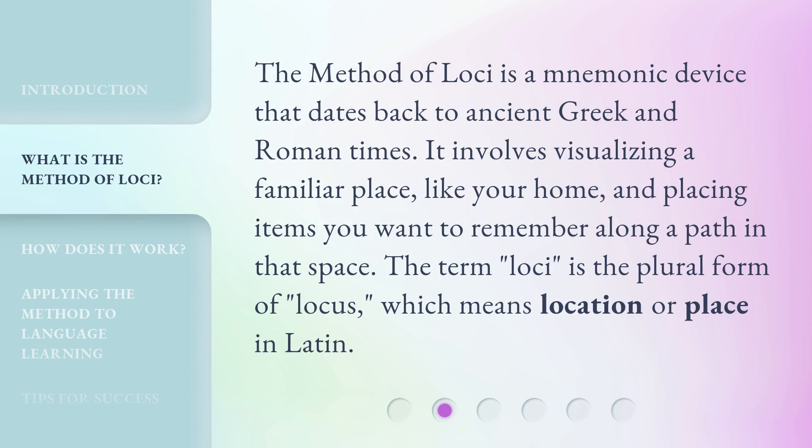The method of loci is a mnemonic device that dates back to ancient Greek and Roman times. It involves visualizing a familiar place, like your home, and placing items you want to remember along a path in that space. The term 'loci' is the plural form of 'locus,' which means location or place in Latin.